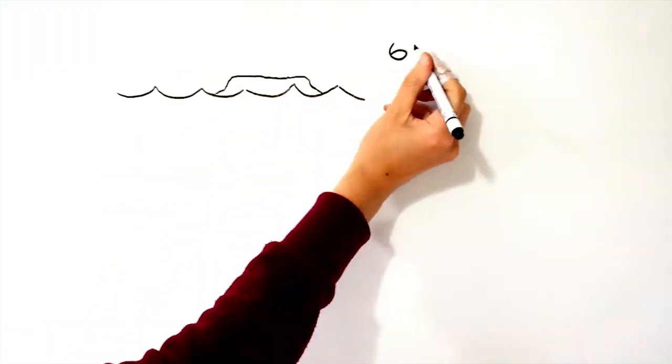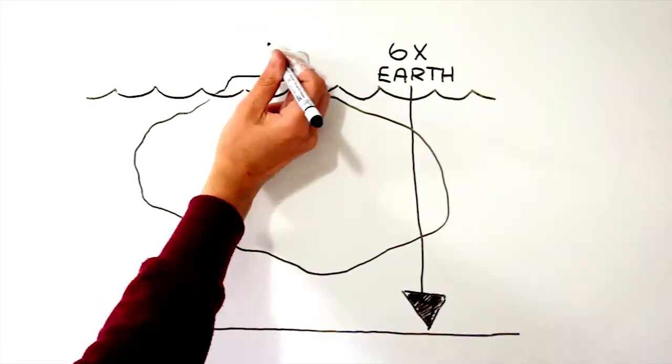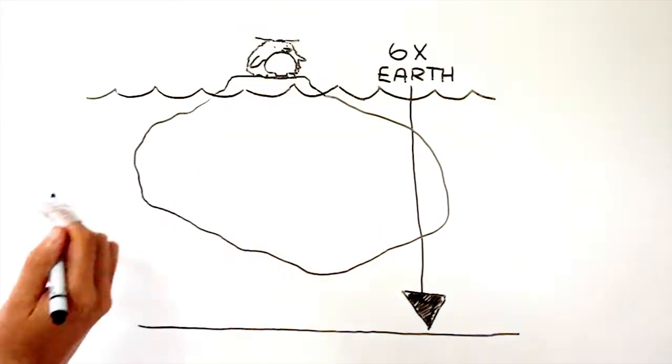First of all, Saturn wouldn't float like a balloon, just touching the surface. It would float more like an iceberg, with a small bit above the water, but the majority below.